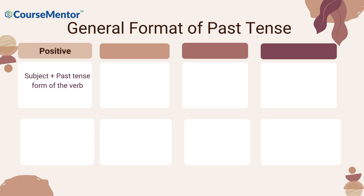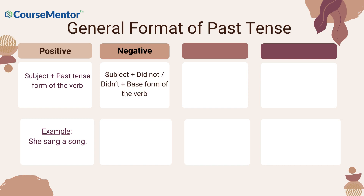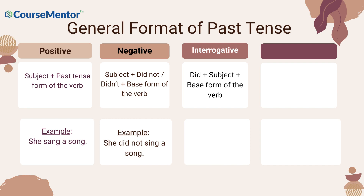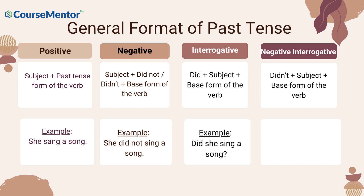Positive: subject plus past tense form of the verb. Example: 'She sang a song.' Negative: subject plus 'did not' (didn't) plus base form of the verb. Example: 'She didn't sing a song.' Interrogative: 'did' plus subject plus base form of the verb. Example: 'Did she sing a song?' Negative interrogative: 'didn't' plus subject plus base form of the verb. Example: 'Didn't she sing a song?'